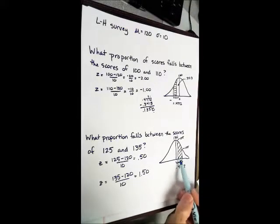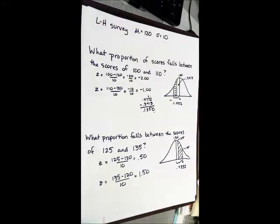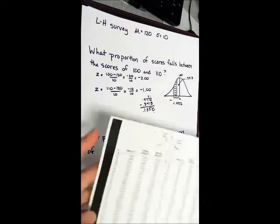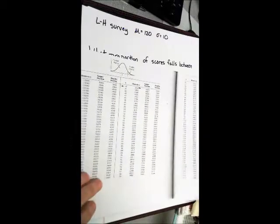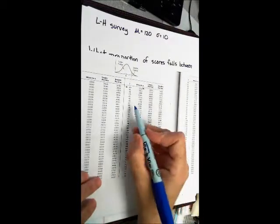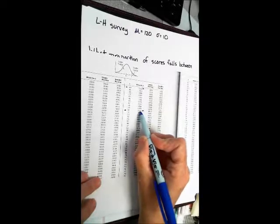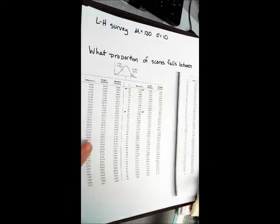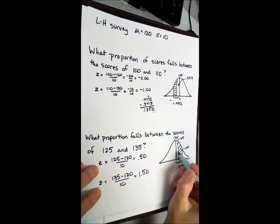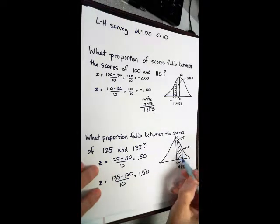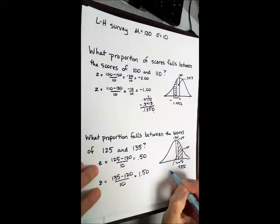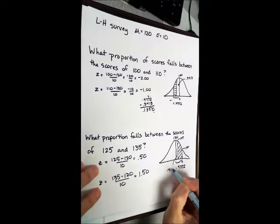If we don't want that whole proportion, we're going to have to subtract out this little bit here. So find my z-table that has the 0.5 in it. 0.50, mean to z, 0.1915. That's the proportion from the mean to z. So that is this area, 0.1915.